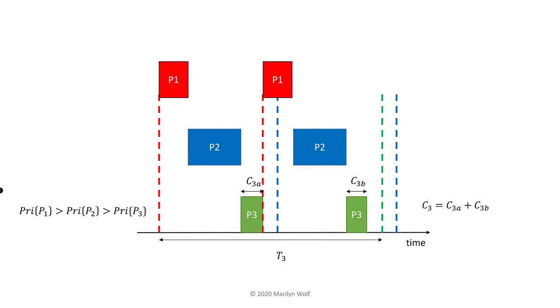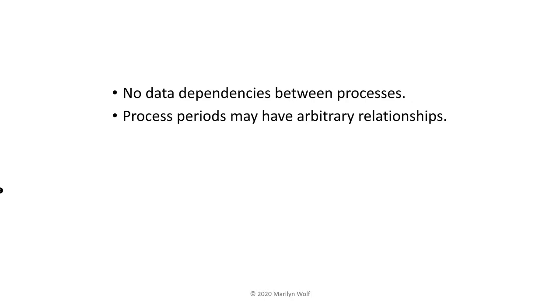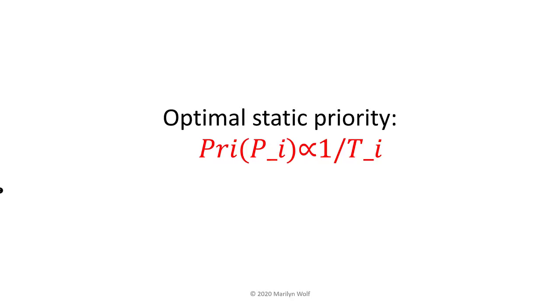Rate monotonic scheduling makes several assumptions: no data dependencies between processes; periods can have arbitrary relationships with no necessary ratio between them; zero context switching time for the operating system; each process is released at the start of its period; and the execution time in each period is fixed and known in advance. Given those assumptions, Liu and Leyland showed that the optimal priority setting for static priorities is based on the periods — the shorter the period, the higher the priority.